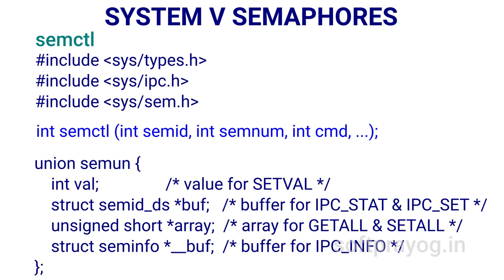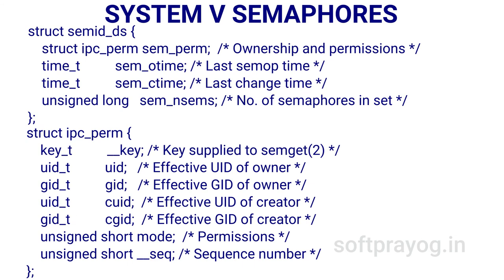The integer val member is used for passing values for the SETVAL command. The array member is used for passing values for all semaphores in the set. The buf member points to struct semid_ds, which has four members: struct ipc_perm for ownership and permissions, sem_otime for the time of last semop, sem_ctime for the last change time, and sem_nsems giving the number of semaphores in the set. The ipc_perm struct has key, UID, GID of owner and creator, and an unsigned short integer mode whose least significant nine bits hold the permissions.